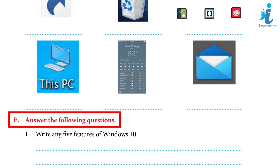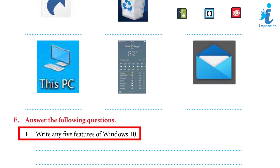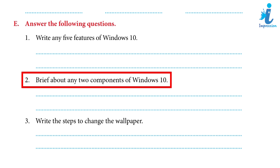Answer the following questions: 1. Write any 5 features of Windows 10 — The Start button is back; Microsoft Edge replaces Internet Explorer; Windows now offers a virtual assistant; Security features have been significantly enhanced; Upgrading is free for one year. 2. Brief about any two components of Windows 10 — Control Panel: allows users to view and change basic system settings such as adding hardware, removing software, and controlling user accounts. Device Manager: allows the user to display and control the hardware attached to the computer and manage device drivers.